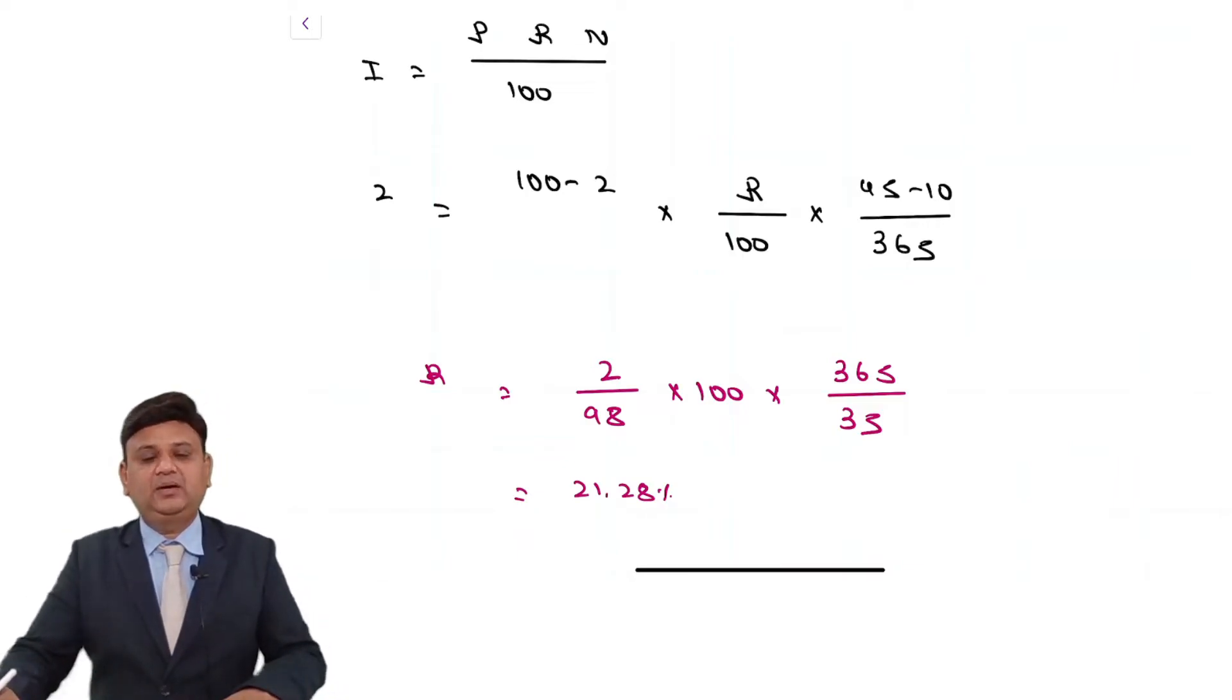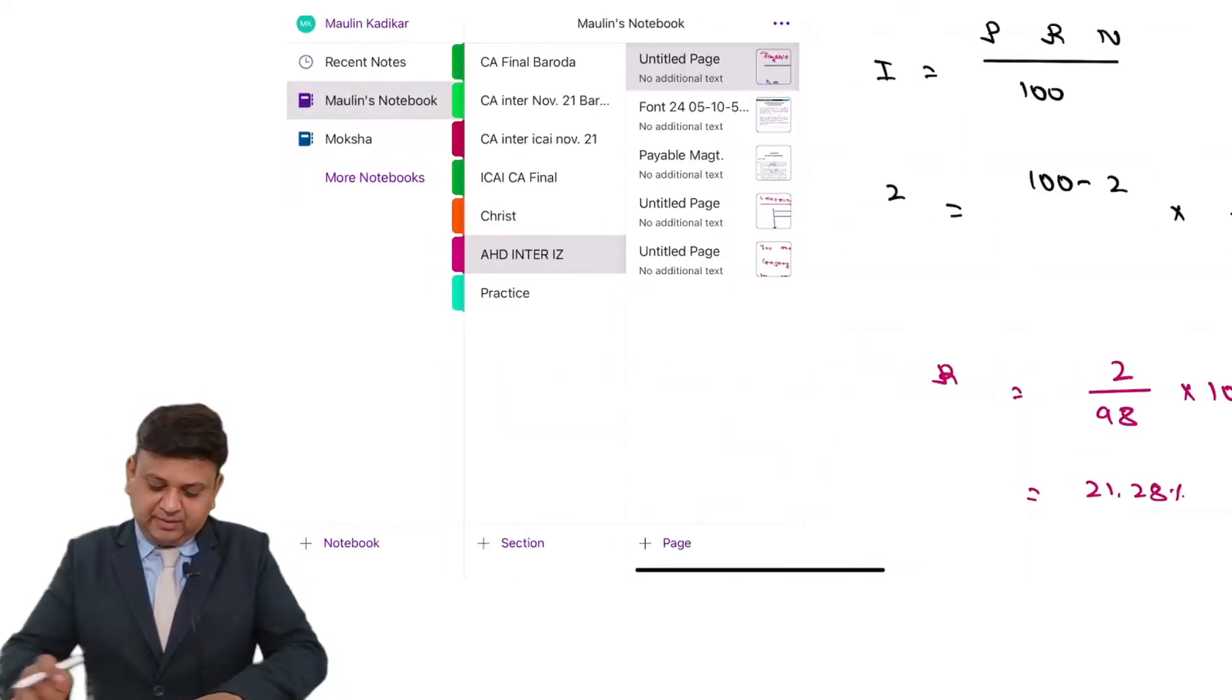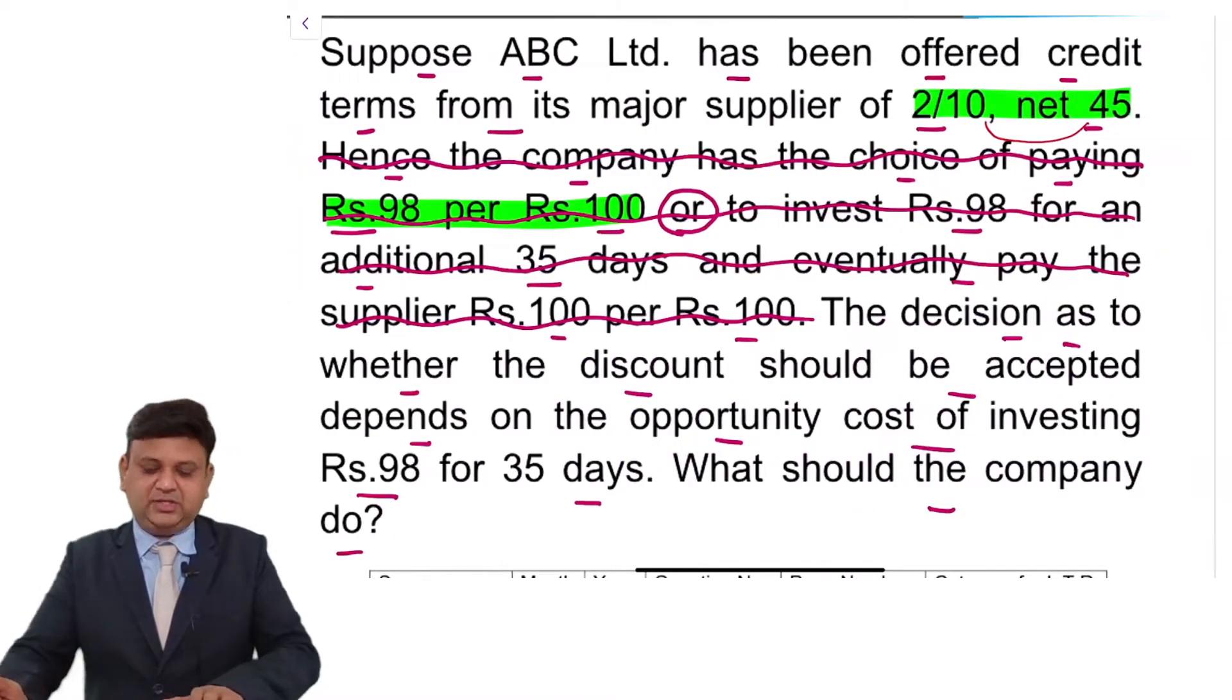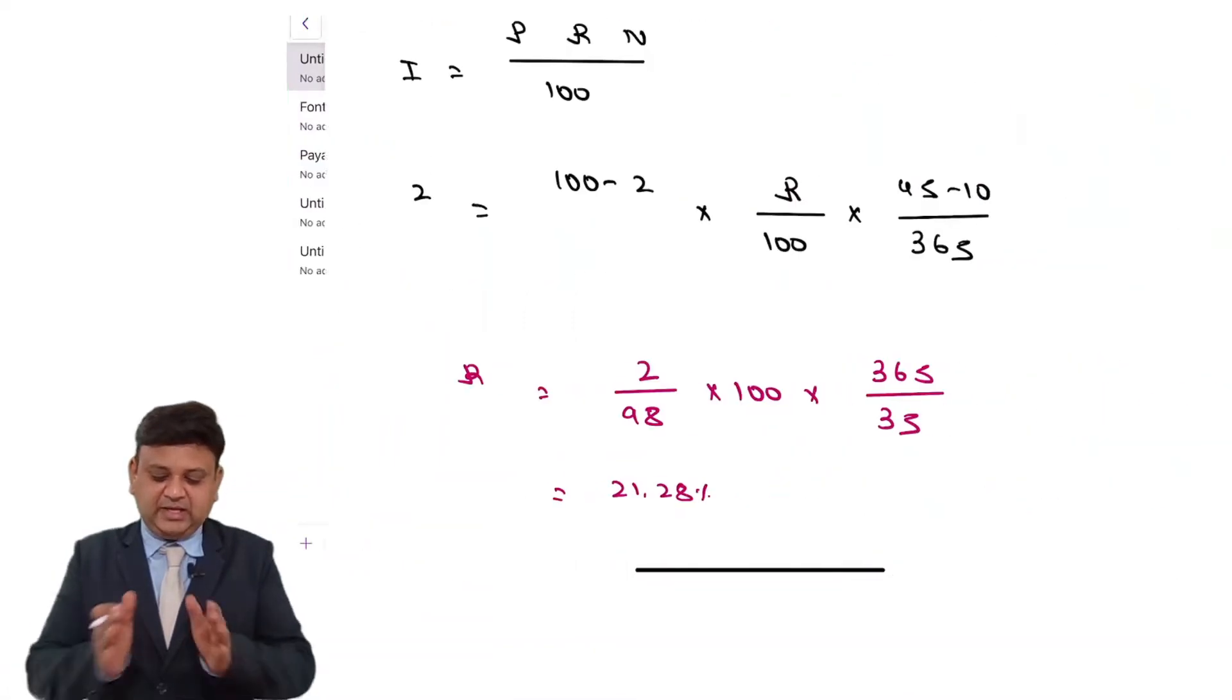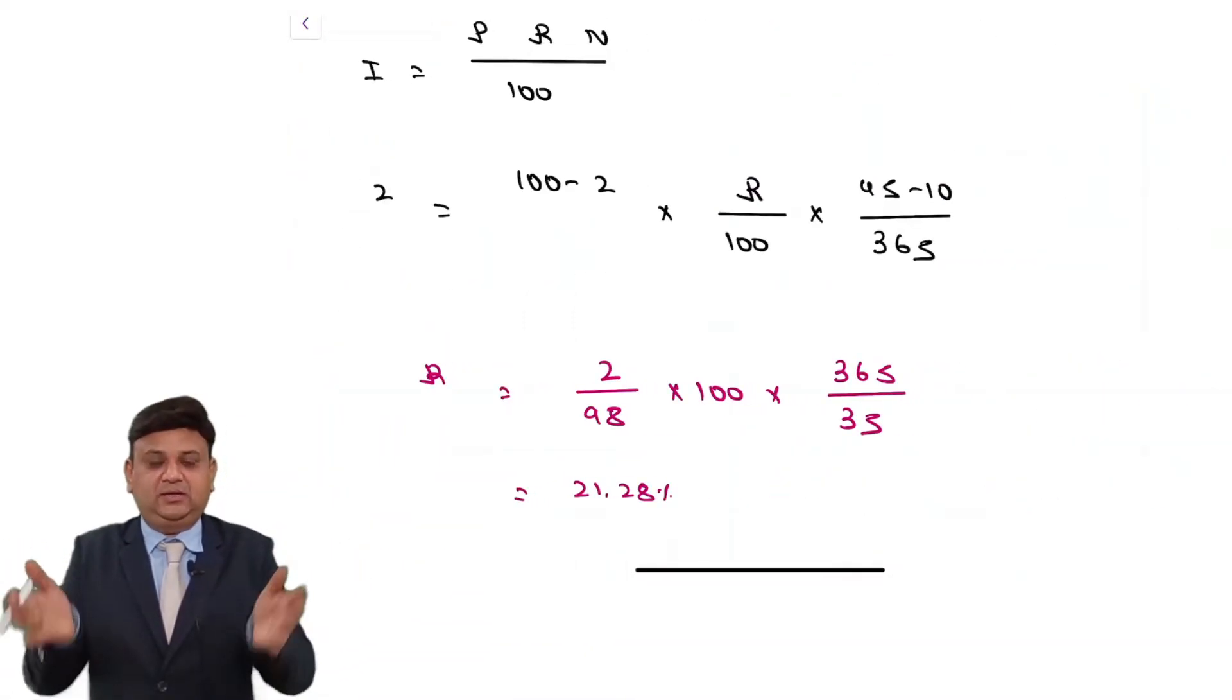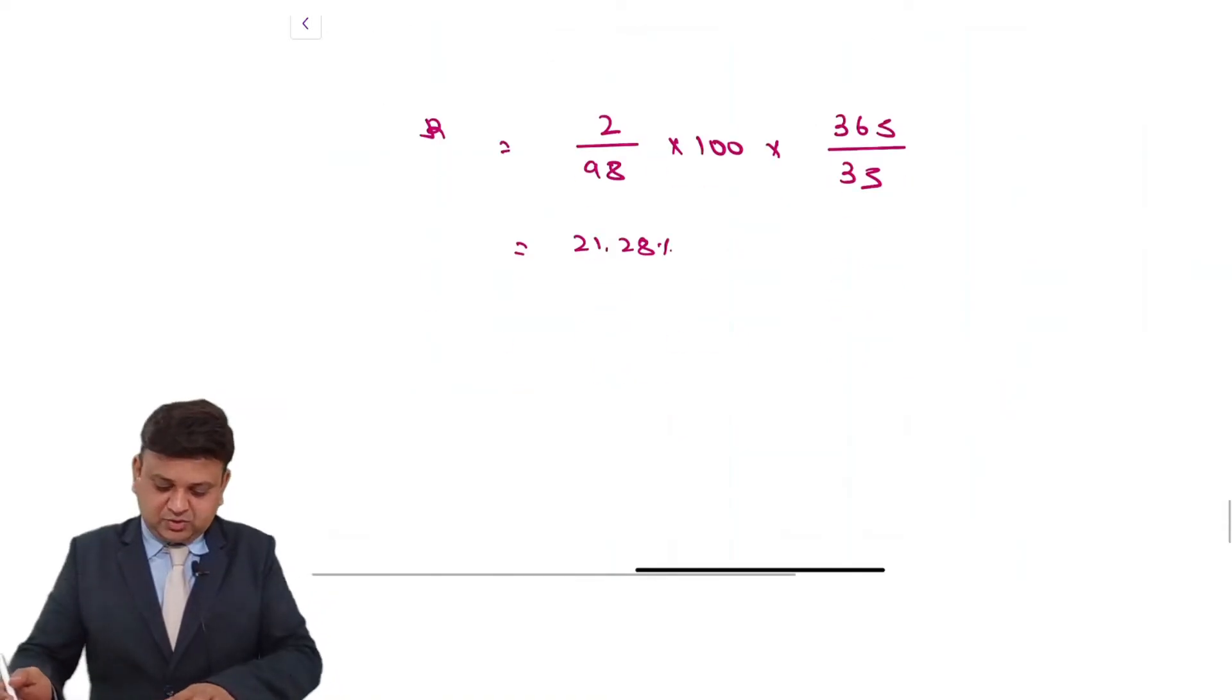Now friends, yahan pe important link question mein company ka cost of capital ka information nahin hai. That is what you can see, pure question mein cost of capital ka information hi nahin hai. Isliye yahan pe hum log kya denge, ek open-ended answer denge. Hum log kuch aisa likhenge.